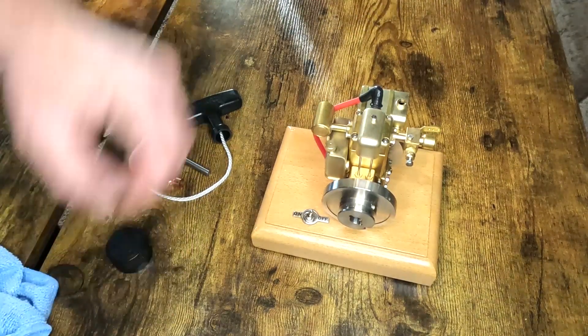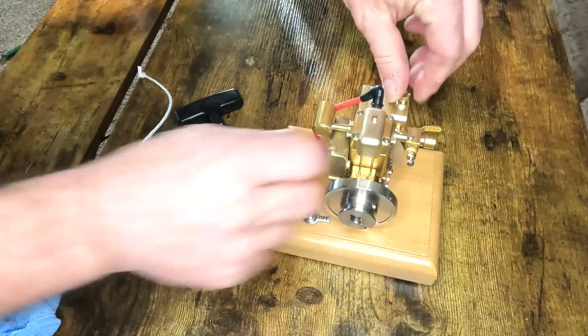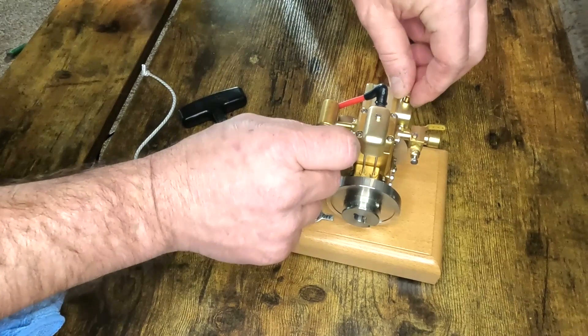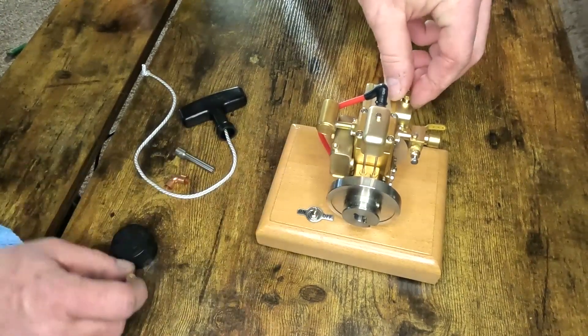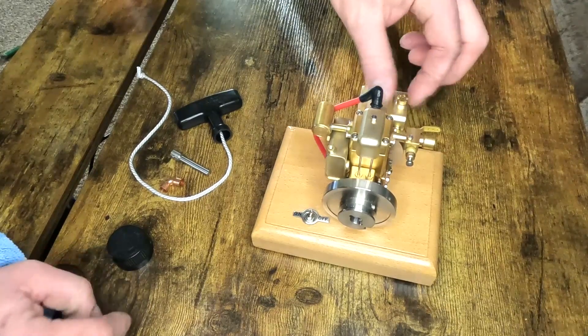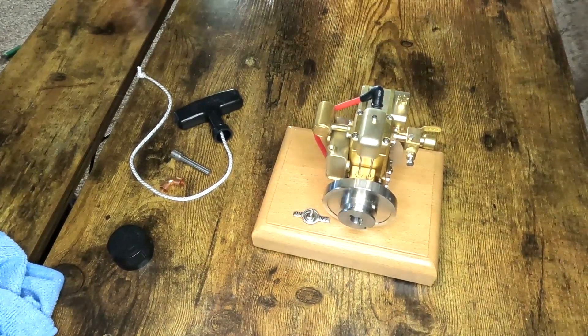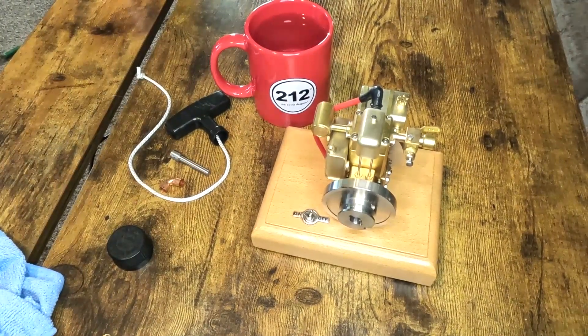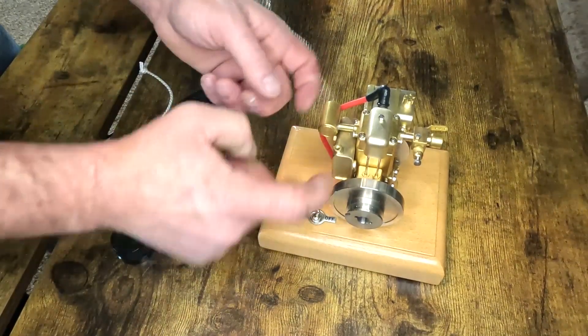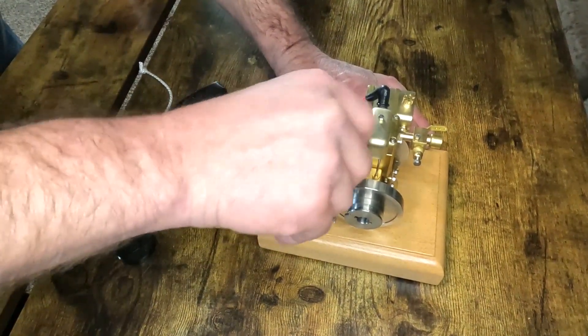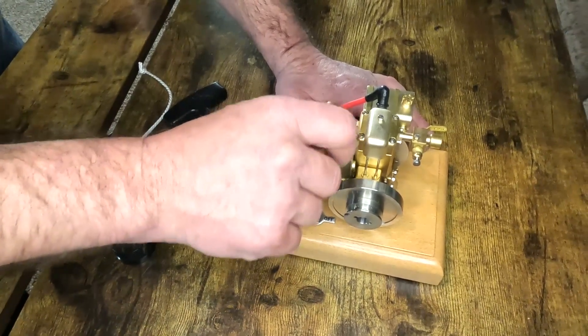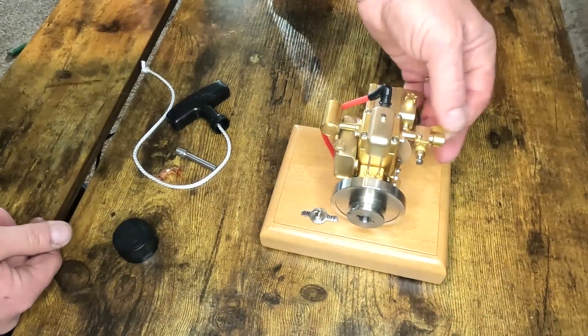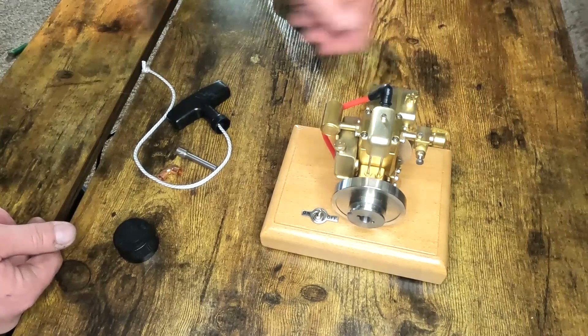We're going to start with six milliliters of fuel into the fuel cell. Put our cap back on. We'll fill up our water expansion tank. For this I'm just using distilled water. We've got our water hopper full. I've not tried to run this engine at all yet. I'm not sure which direction wide open is. We'll put it in the middle.